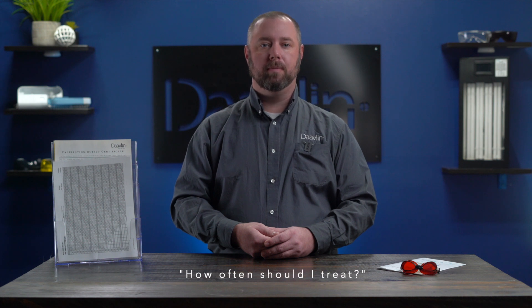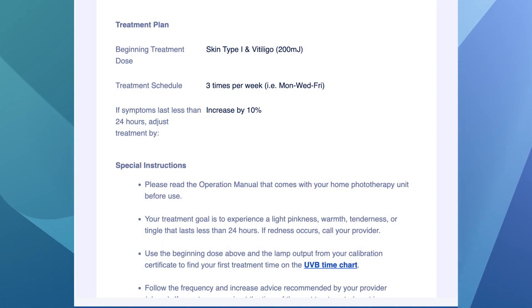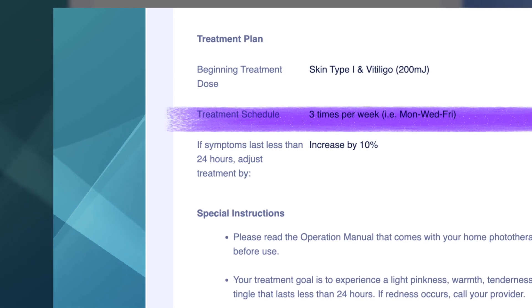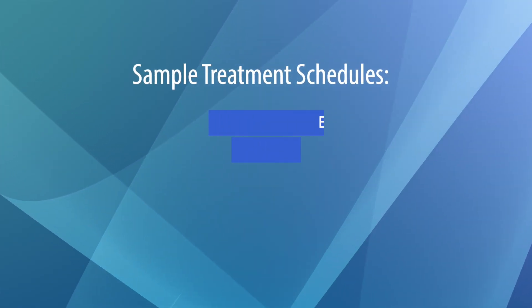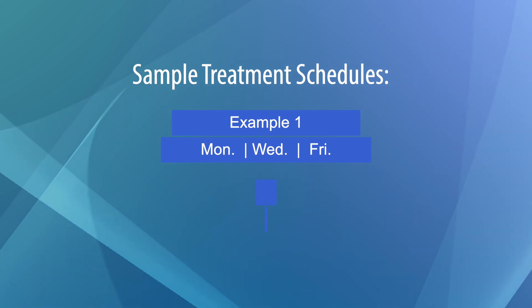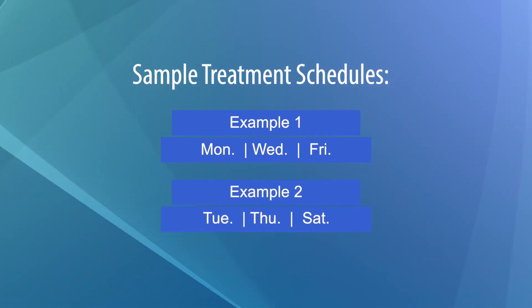You may be wondering: how often should you treat? Take another look at your doctor's phototherapy instructions. Under the treatment plan section, you'll see your treatment schedule — that is the number of times per week that you will use your phototherapy device. For example, if your doctor has instructed you to treat three times per week, you might do your treatments on Monday, Wednesday, and Friday, or Tuesday, Thursday, and Saturday.